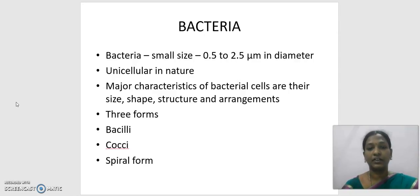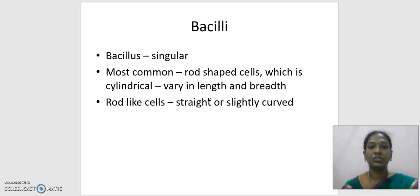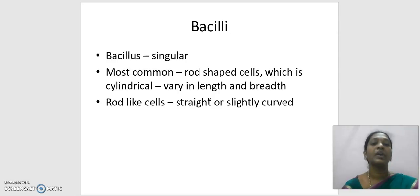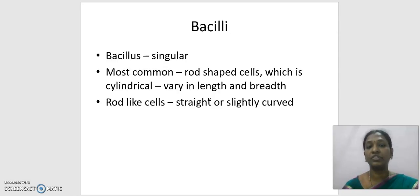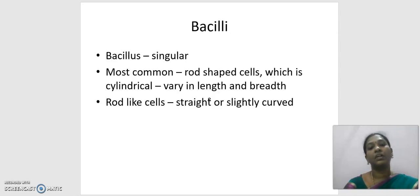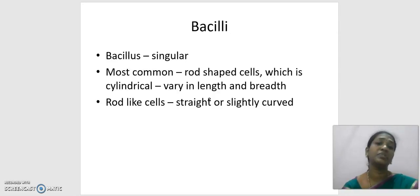The three forms are bacilli, cocci, and spiral. Bacilli is the plural form and bacillus is singular. Most commonly, bacillus species are rod-shaped — cylindrical in shape — which can vary in their length and breadth. These cylindrical cells may sometimes be straight or slightly curved at the center.